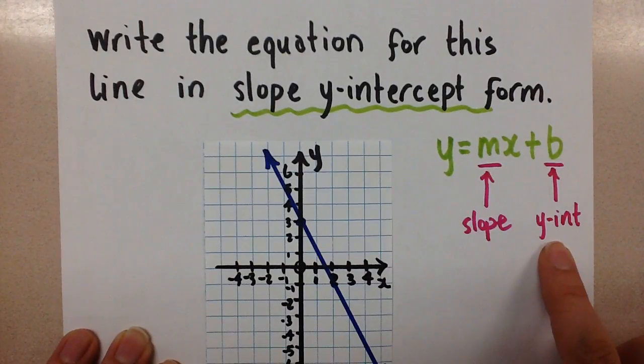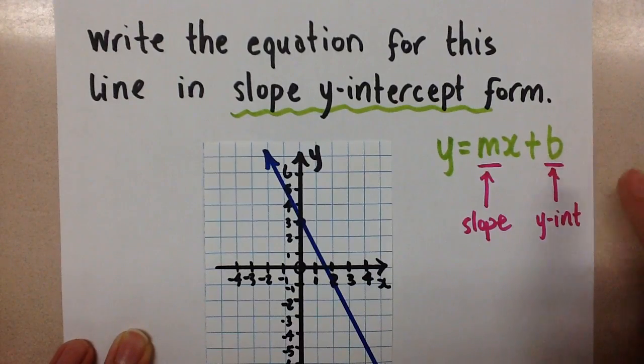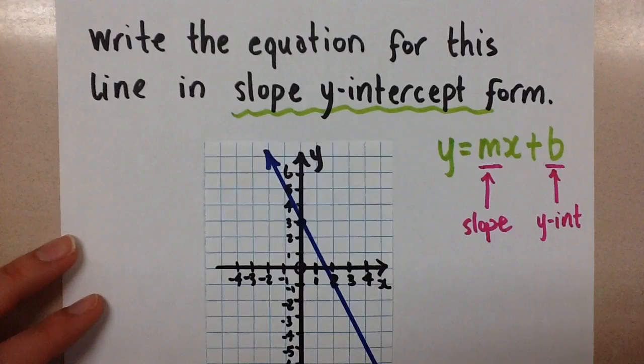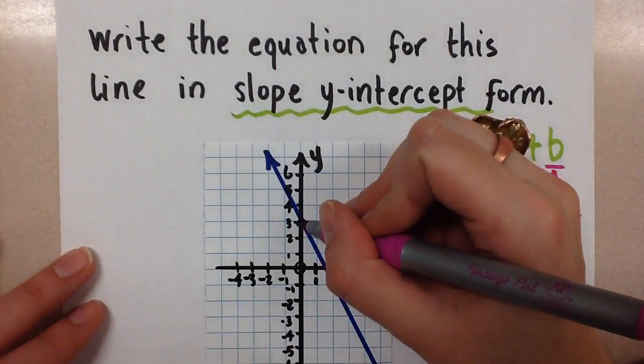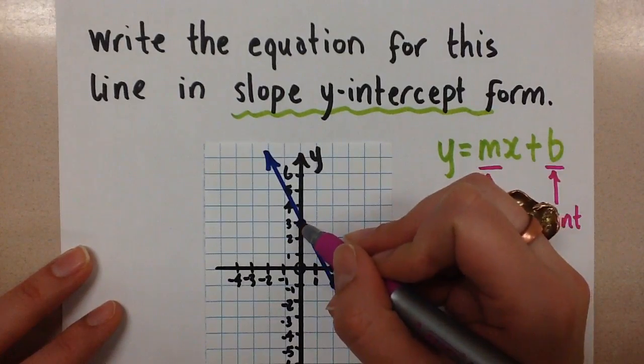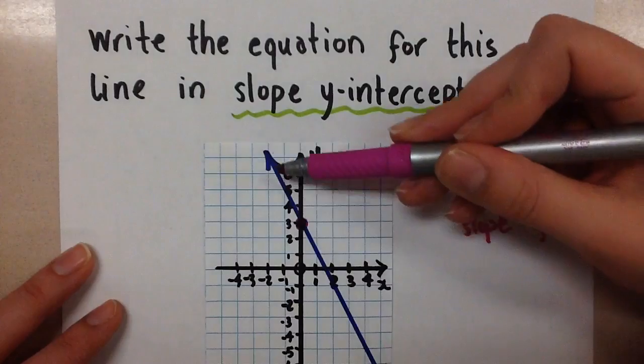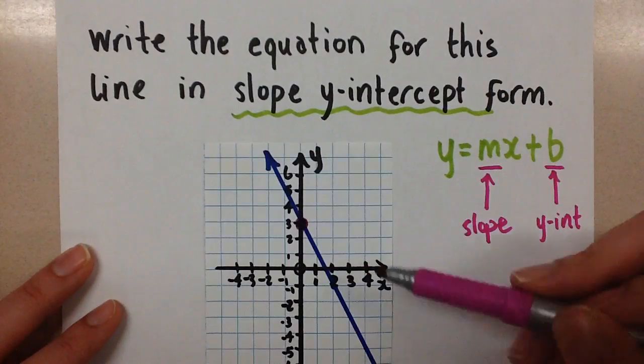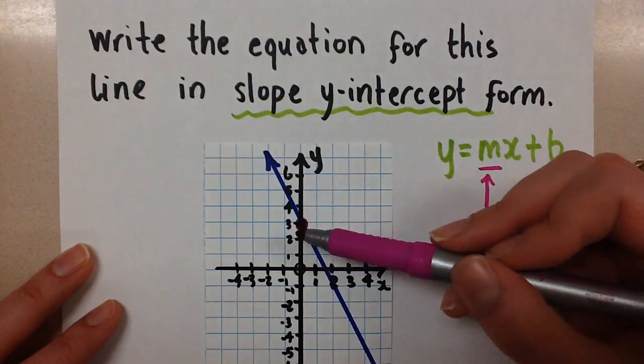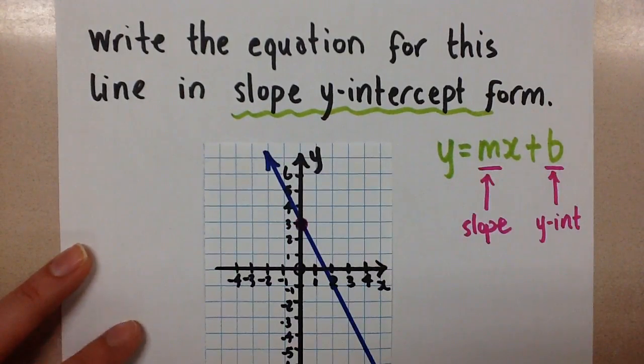So those are the two things that we need in order to get this form of the equation of a line. So we're given a graph here. When we look at this graph, immediately I see that the y-intercept is right here. The y-intercept means where the line that we're looking at crosses the y-axis. So y-intercept crosses the y-axis when y is 3.